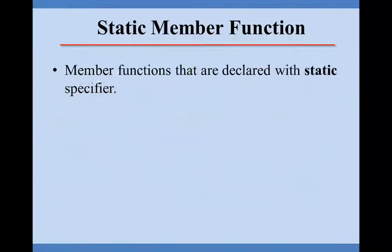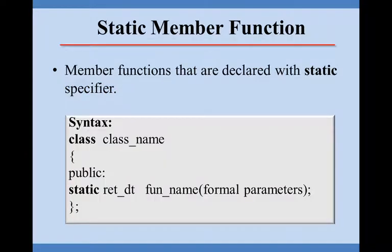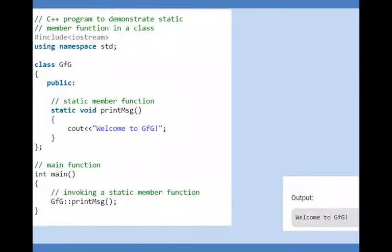Member functions that are declared with a static keyword are called static member functions. If we want to create a single function for all the objects, then we use static keyword. Here the static keyword is necessary, then return type of function, then name of the function, and then formal parameter list.